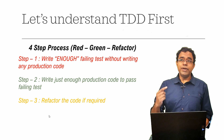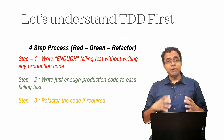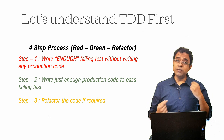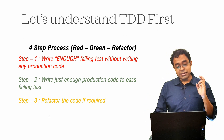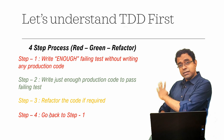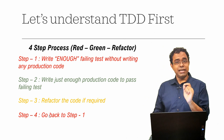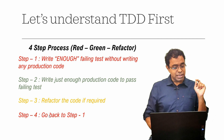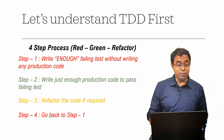Step three is to refactor the code if required. When you start writing TDD you may skip step three for some time, but if you have a big code base you will end up refactoring every time you write a new set of test cases. Step four is to go back to step one and repeat the cycle. That's the four-step red-green-refactor process.